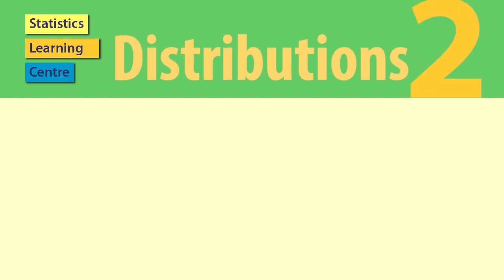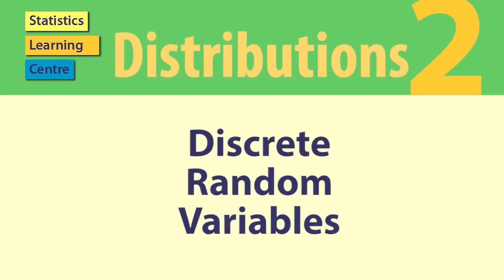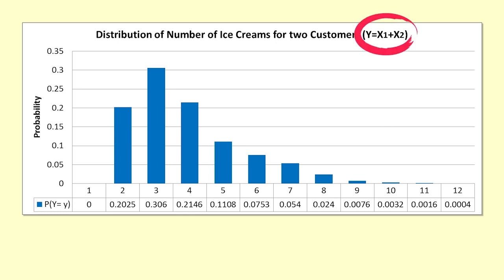In distributions 2 we look at how to calculate random variables from other random variables, particularly for discrete distributions.